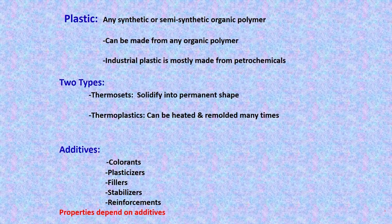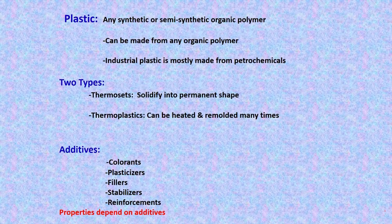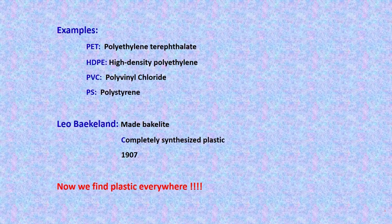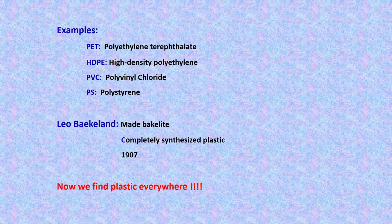When we make plastics we also use a lot of additives like colorants, plasticizers, fillers, stabilizers, and reinforcements. The specific properties of any plastic depend on these additives. Examples of plastics include PET (polyethylene terephthalate), HDPE (high density polyethylene), PVC (polyvinyl chloride), and PS (polystyrene), among others.